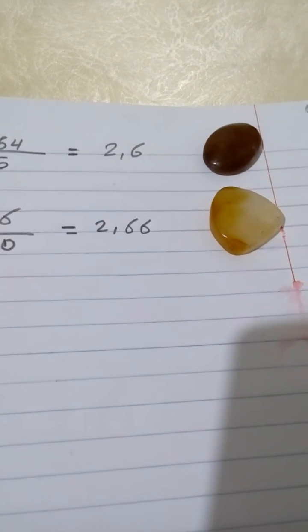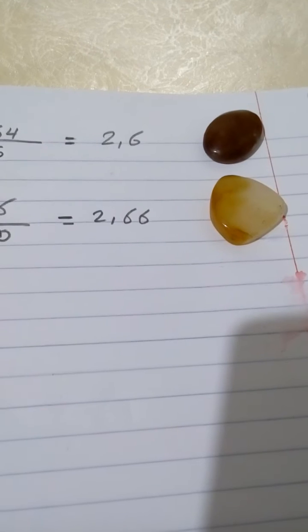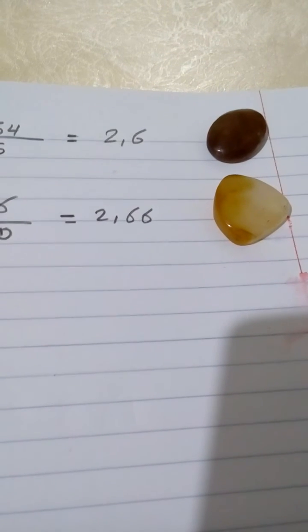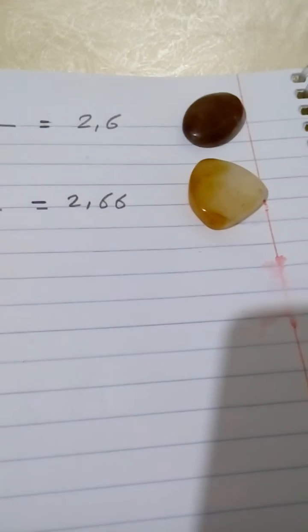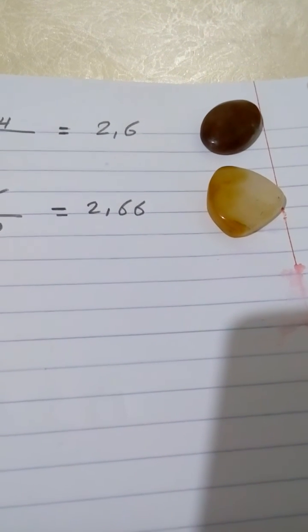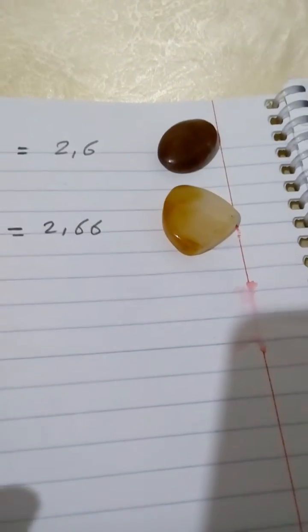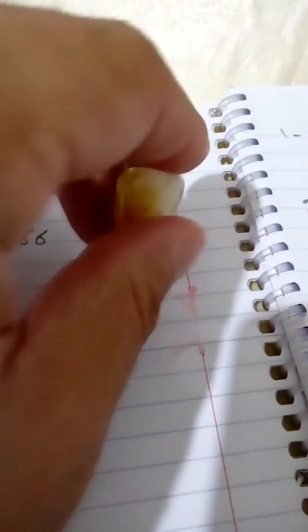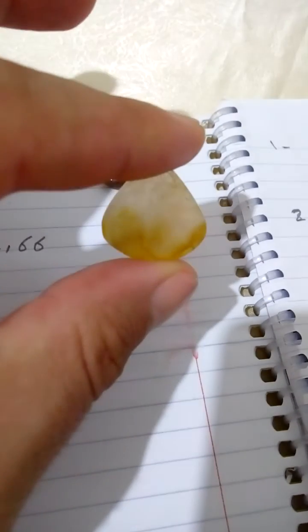We find our particular stone has a density of 2.66, so we know that this stone is a citrine stone. It belongs to the quartz stones family.